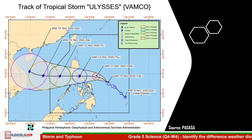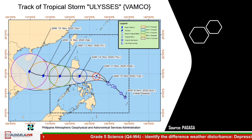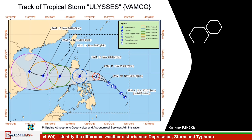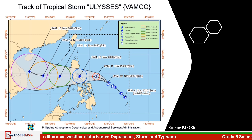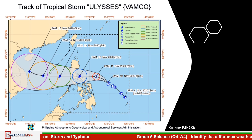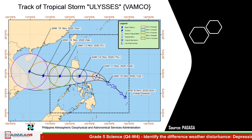You are now seeing Typhoon Ulysses, which made its first landfall on Patnanungan Island, Quezon Province, Philippines, last November 11, 2020. It had a maximum sustained wind speed of 150 kilometers per hour. The typhoon unleashed powerful winds and torrential rains that killed dozens of people, destroying thousands of homes, and caused the worst flooding in Metro Manila in years.